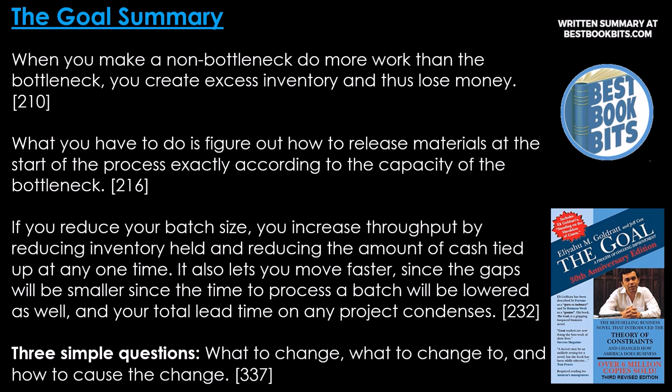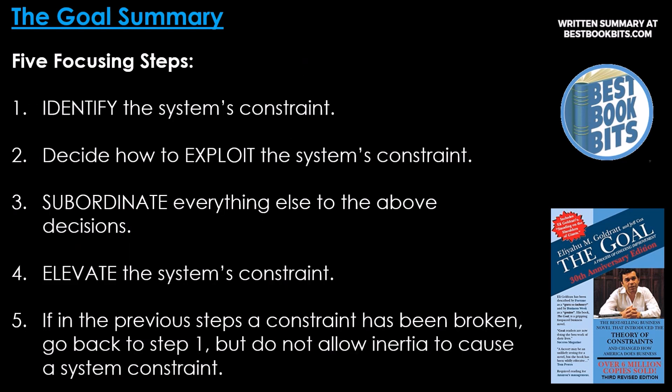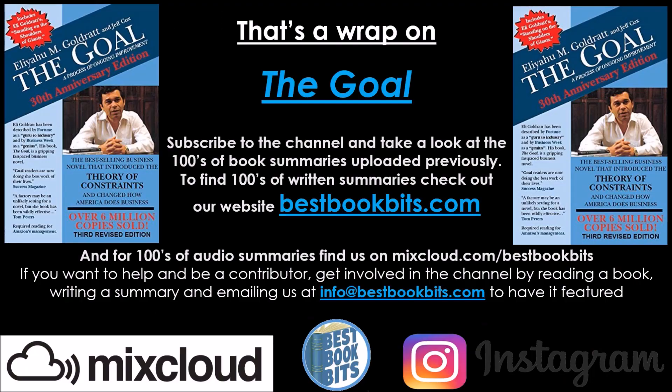Three simple questions: What to change, what to change to, and how to cause the change. The five focusing steps are: one, identify the system's constraint; two, decide how to exploit the system's constraint; three, subordinate everything else to the above decisions; four, elevate the system's constraint; and five, if in the previous steps a constraint has been broken, go back to step one — but do not allow inertia to cause a system constraint.